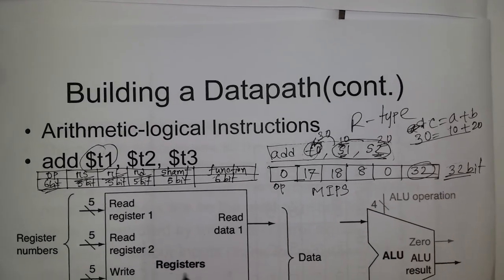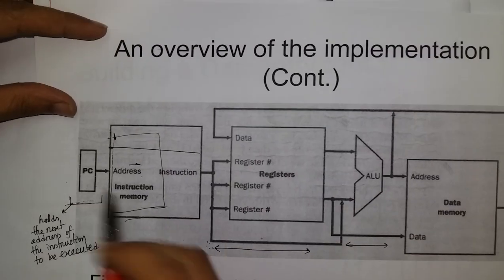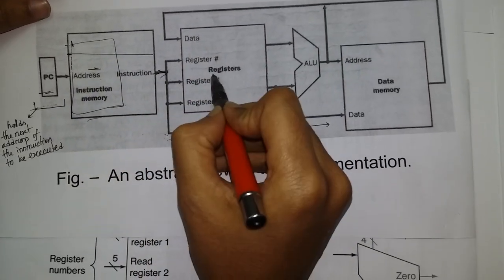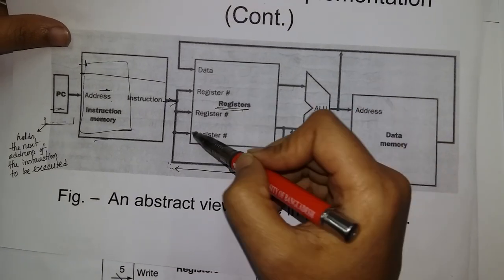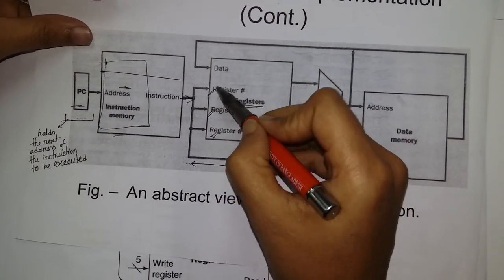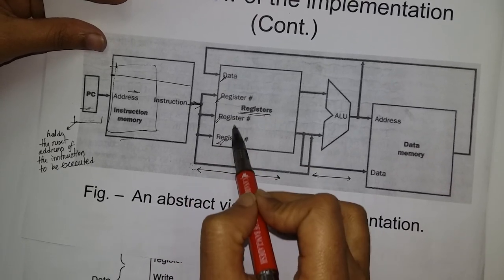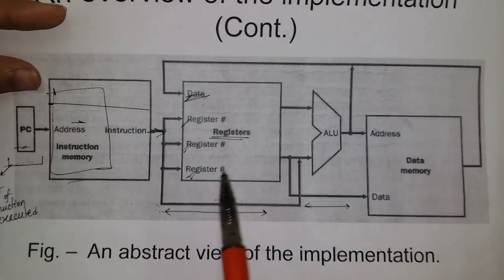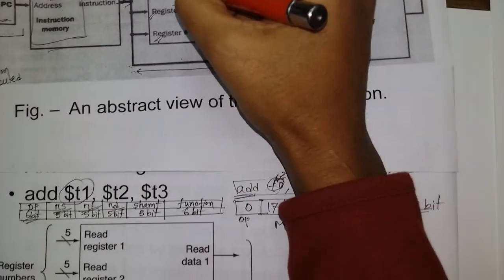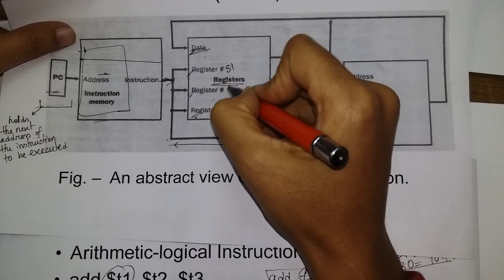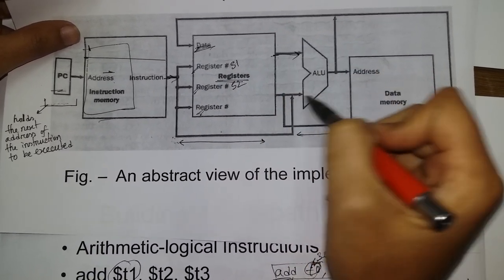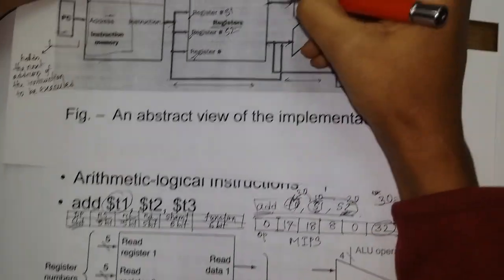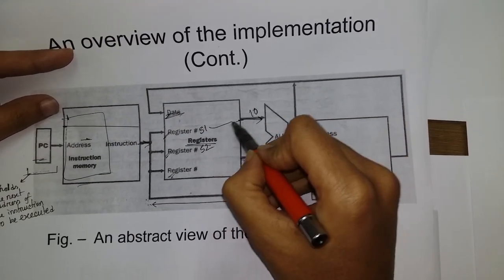This is the register file where data is read and written. There are two register sources, S1 and S2. We read the S1 value which is 10 and the S2 value which is 20 from these two registers.